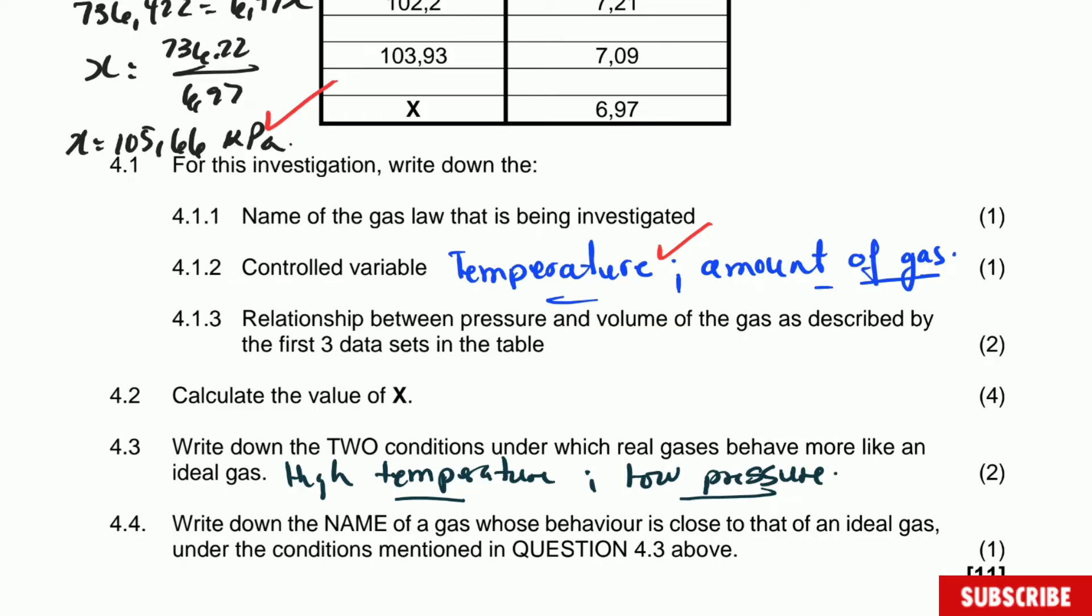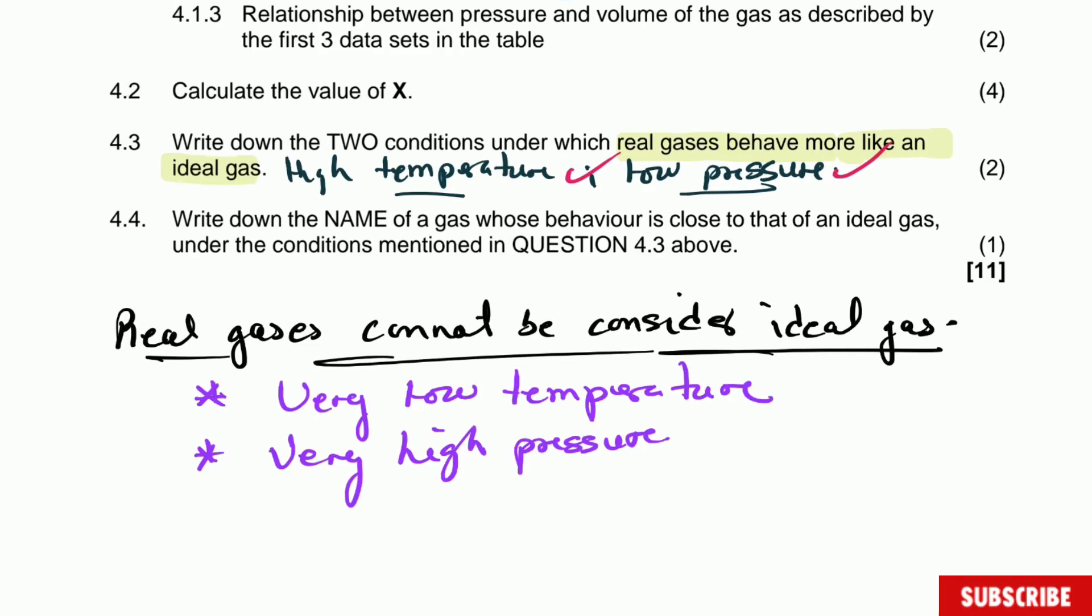You must be careful because sometimes the question is the other way around: write down two conditions under which real gases behave like ideal gases. In other words, if the real gas has a low temperature and a high pressure, then it cannot be considered ideal. That is the important thing here. That one is two marks, and if you say the opposite you get two marks. Let's write here: the real gas cannot be considered ideal gas at very low temperature and very high pressure. This is not the answer of the question—the question is the opposite—but this one is most likely to be asked in the exam.